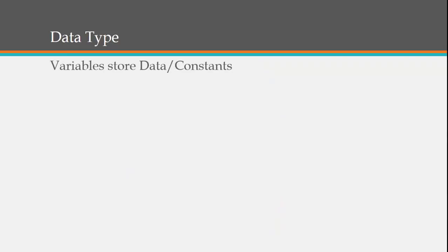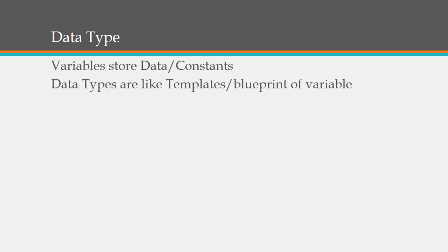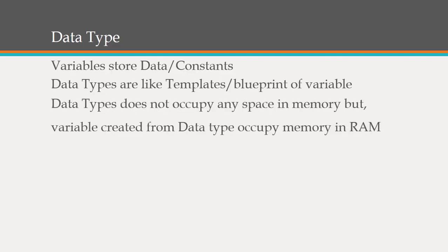From our previous class we know that a variable can store data or a constant, and what type of data or constant it will store depends upon the data type — whether it's a character, numeric, or date type. Data types are like templates or blueprints of a variable. Variables are nothing but reserved memory locations to store values, and based on the data type, the operating system allocates memory and decides what can be stored. Data types do not occupy any space in memory, but variables created from that data type occupy memory in RAM.